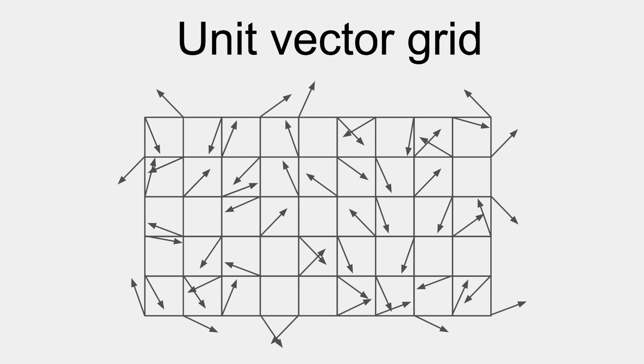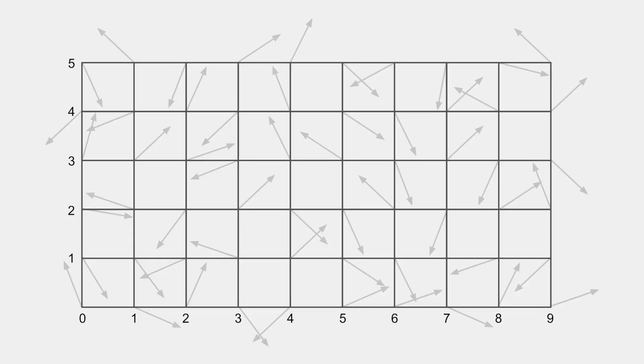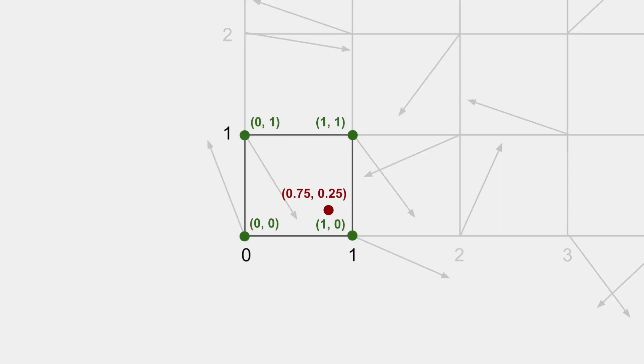Let's add some numbers to this grid. You can think of it as a coordinate plane. Now, say we want to find the value of the Perlin noise layer at the point 0.75, 0.25. The first step is to identify all the corners of the vector grid that surround the target point. In this case, they are 0, 1, 1, 1, 0, 0, and 1, 0.